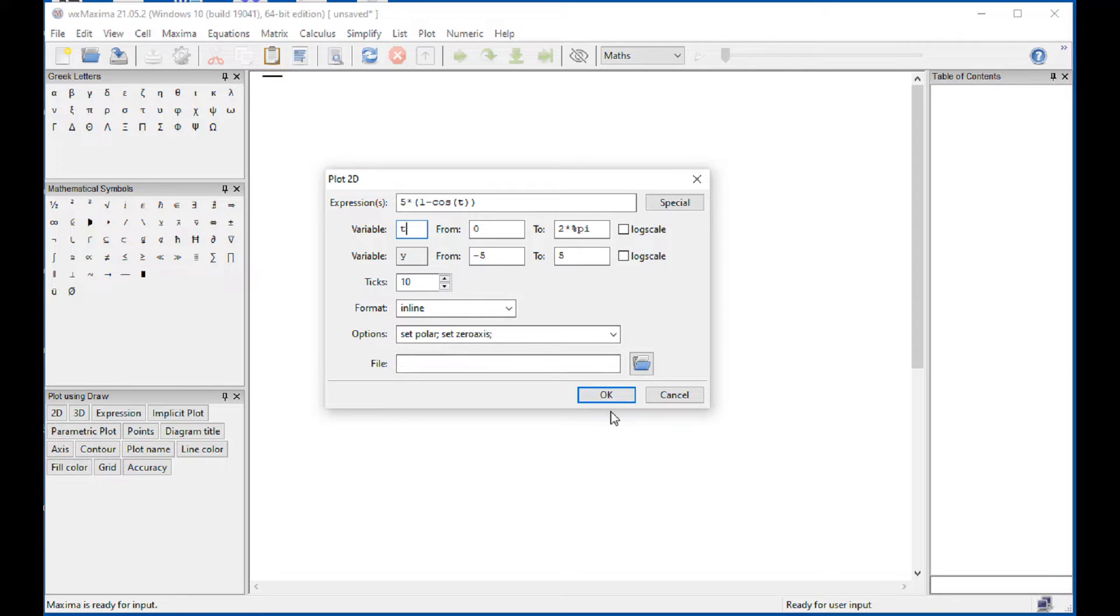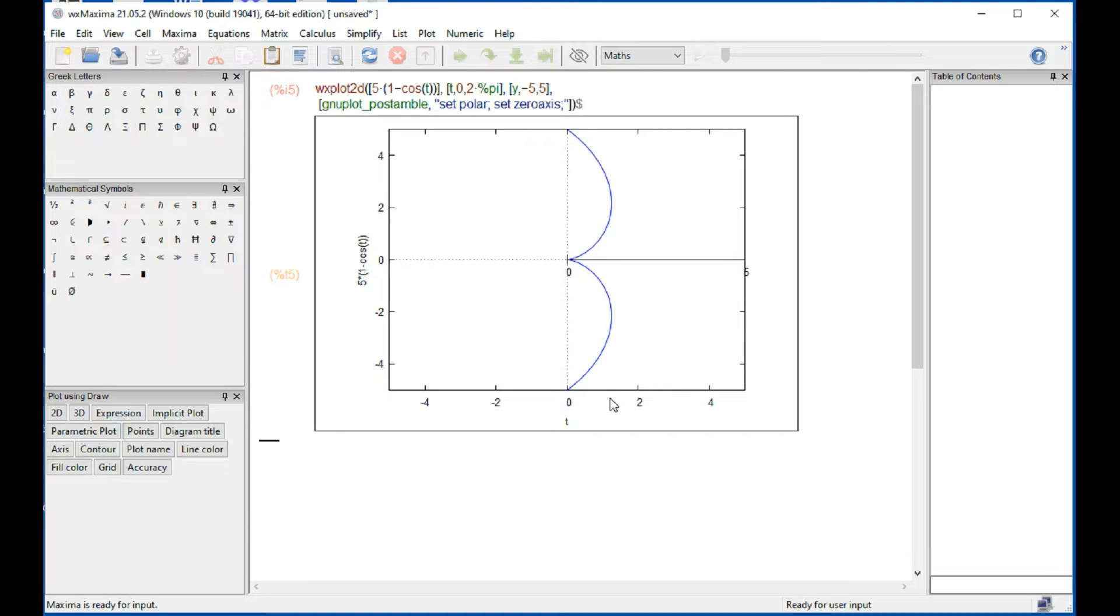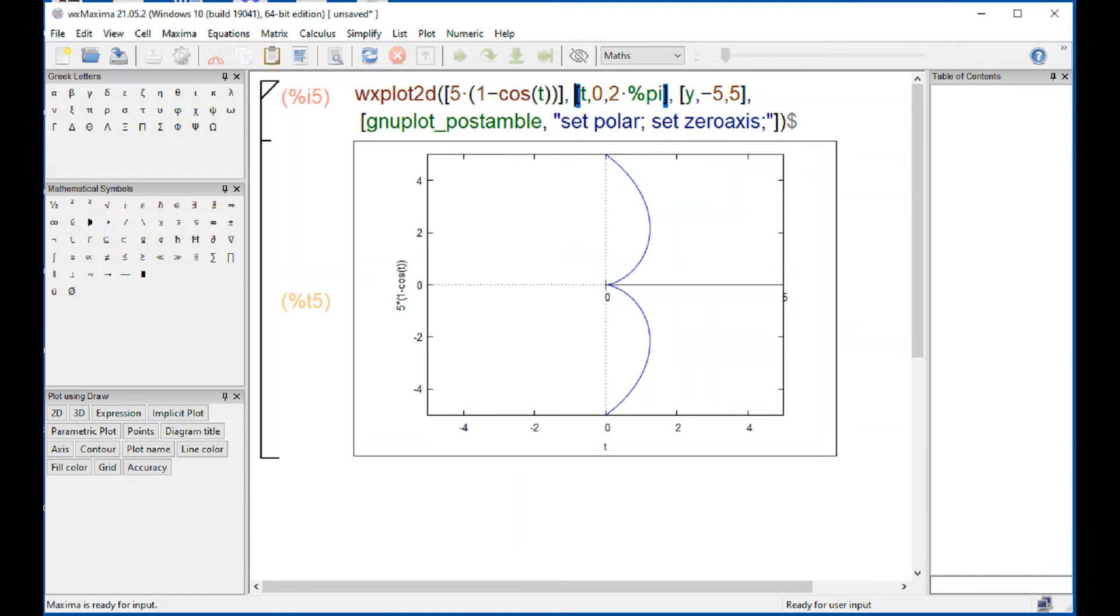Let's see what we get with this. Well we get something but not what I want. What's happening here is that the angle t or theta is going from zero to two pi.